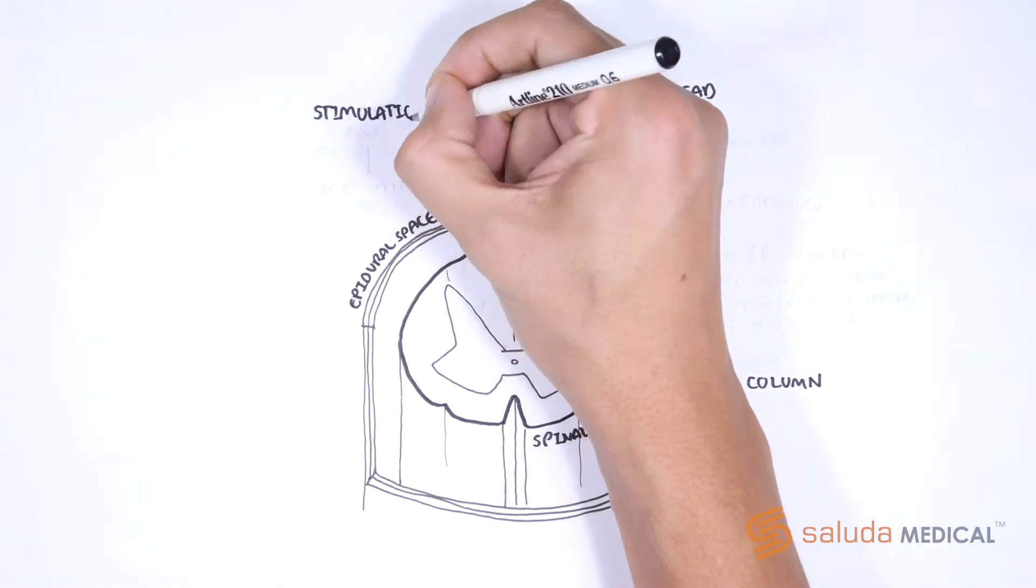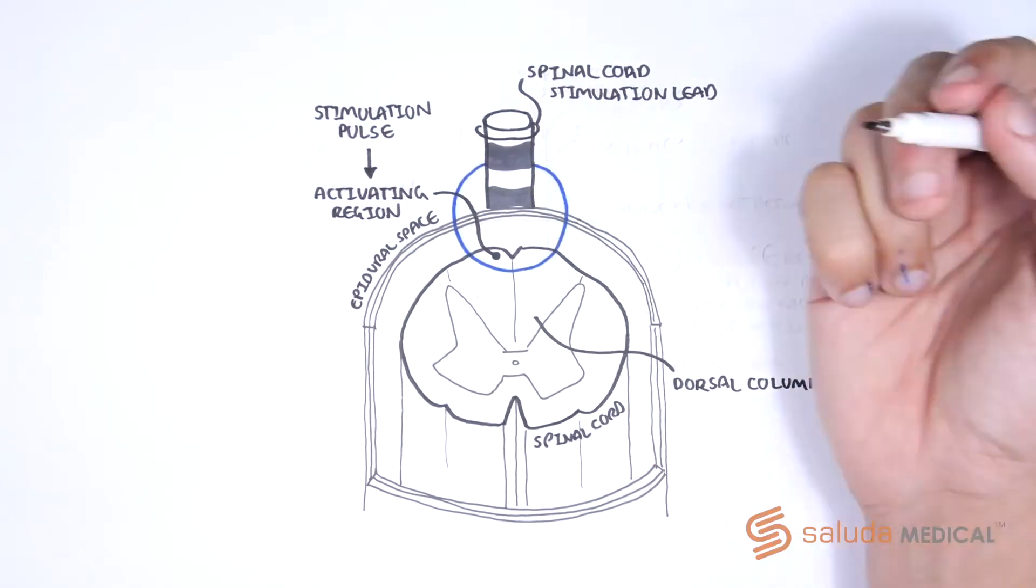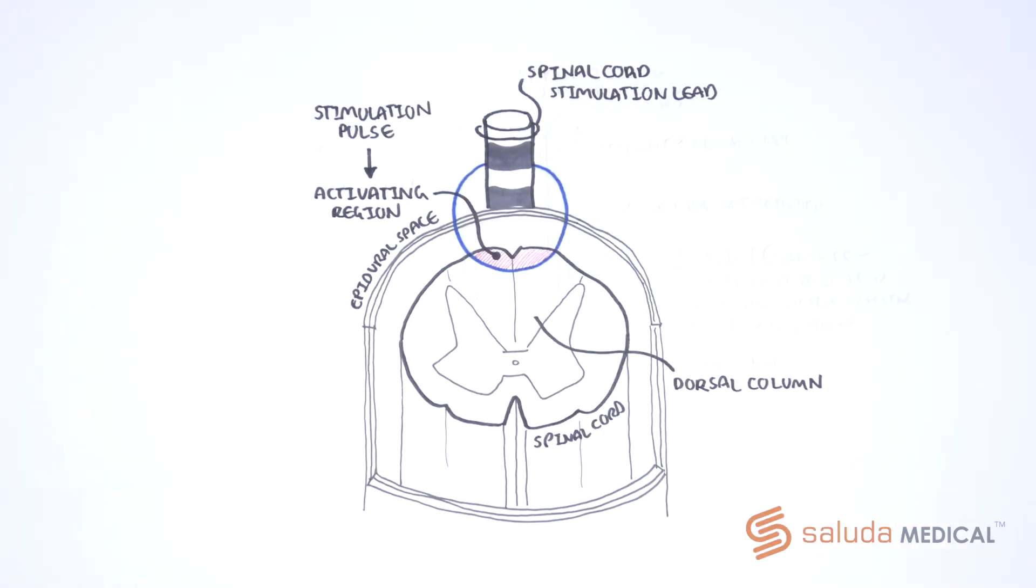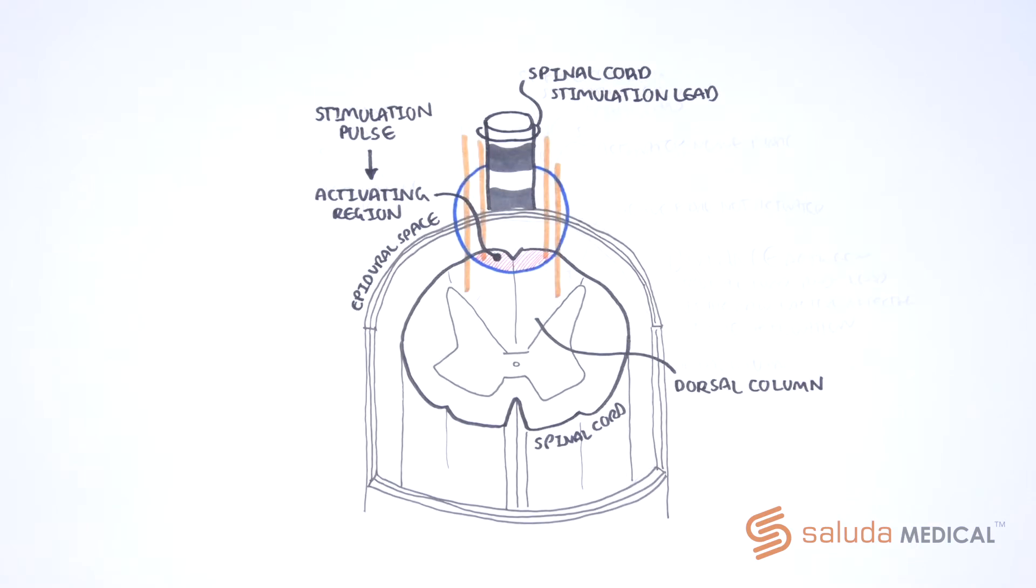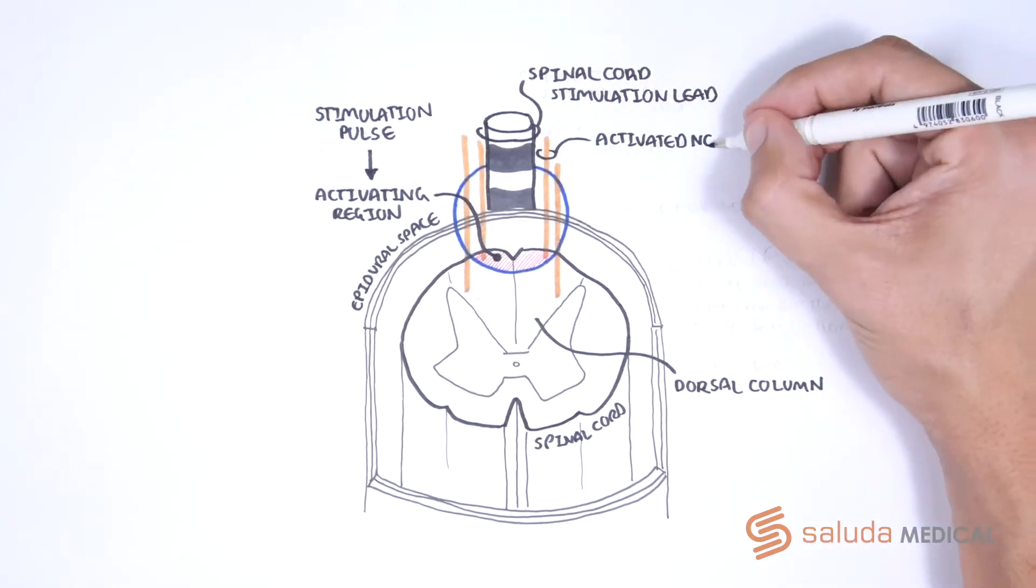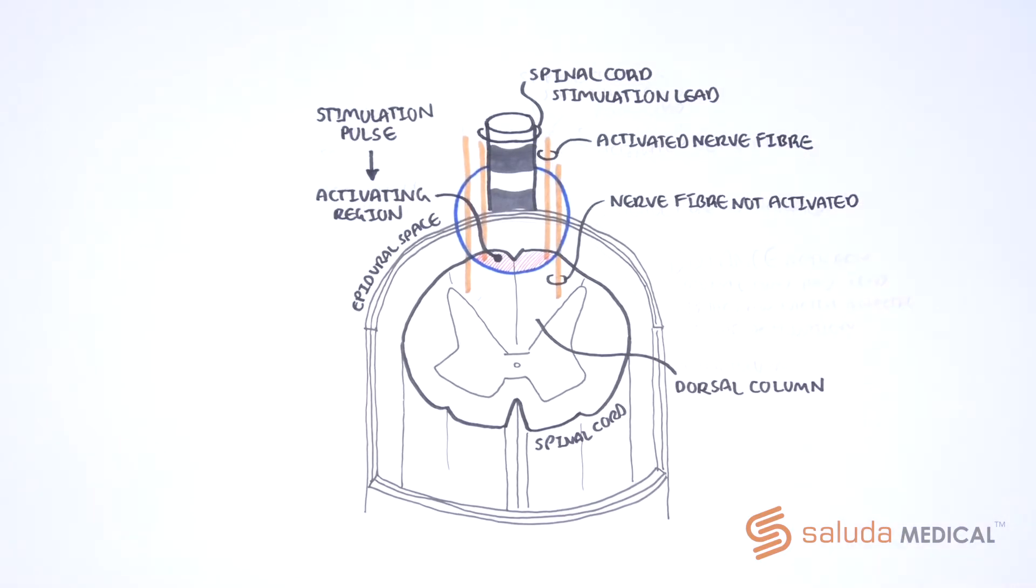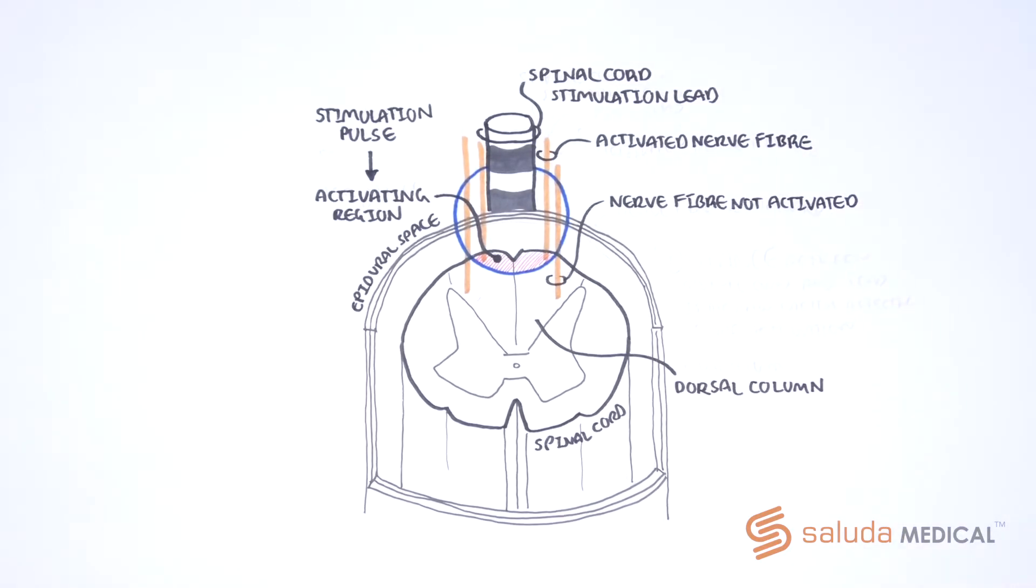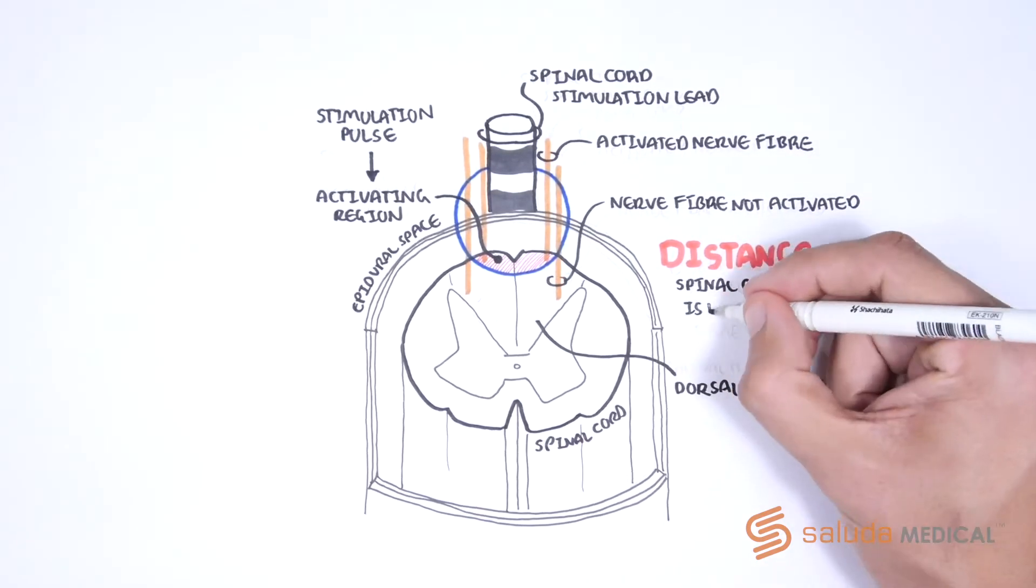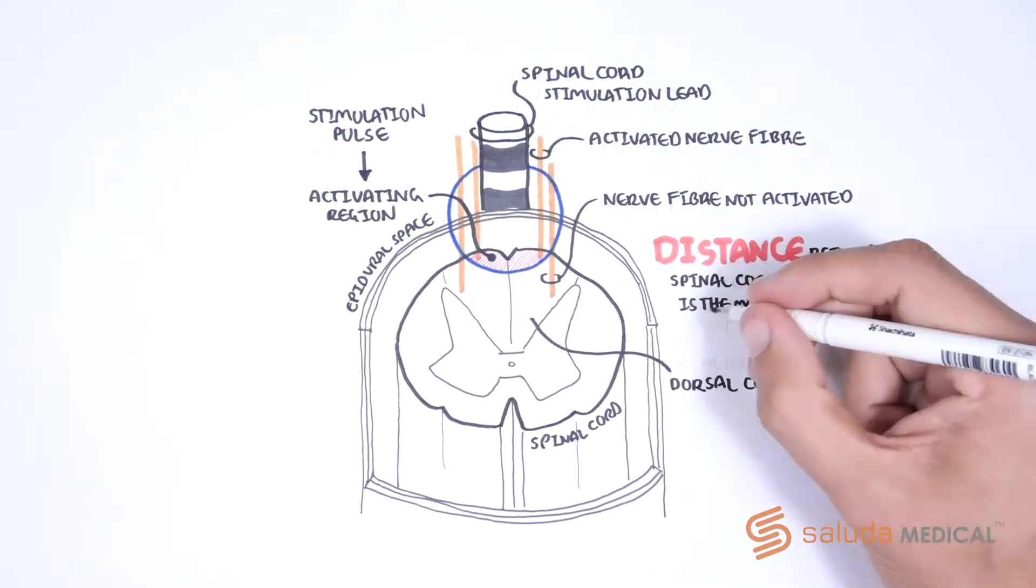Stimulus pulses have a so-called activating region which is the region within which the stim pulse is able to elicit an action potential in a fiber. Fibers outside that activating region will not be activated by the stim pulse. Therefore distance between the spinal cord and lead is the main factor affecting fiber activation in spinal cord stimulation.